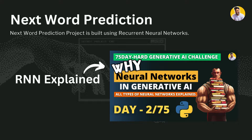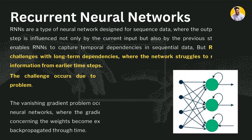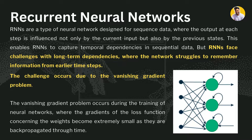Let me give you a brief introduction about recurrent neural networks. Recurrent neural networks are a type of neural network designed for sequential data only. Sequential data has some kind of sequence that depends on the previous state. We can say that the output at each step is influenced not only by the current inputs but also the previous states of the network. This enables the RNN to capture temporal dependencies in sequential data.